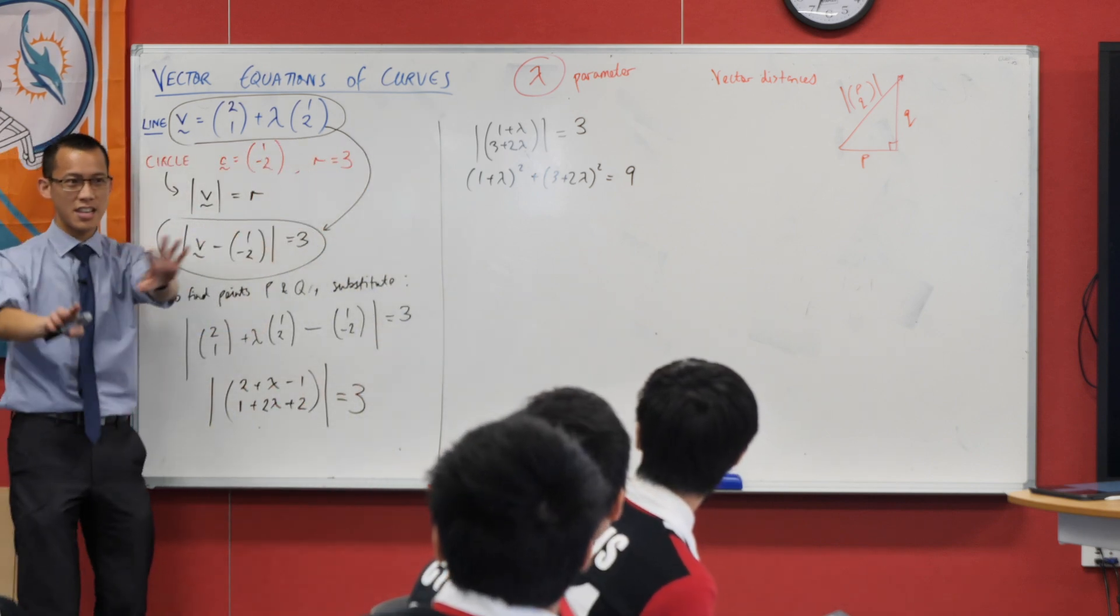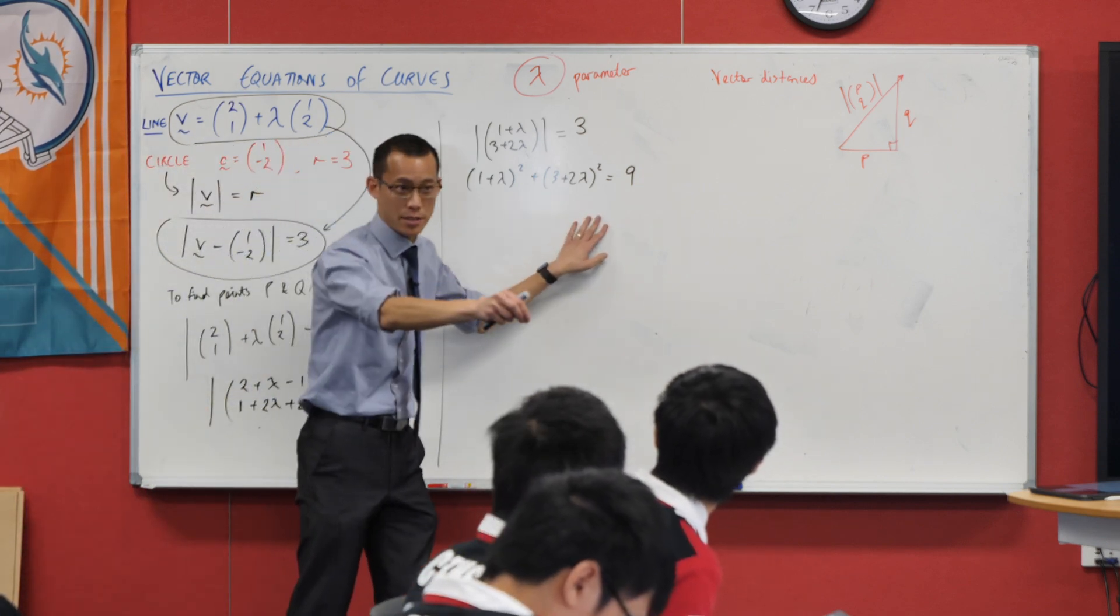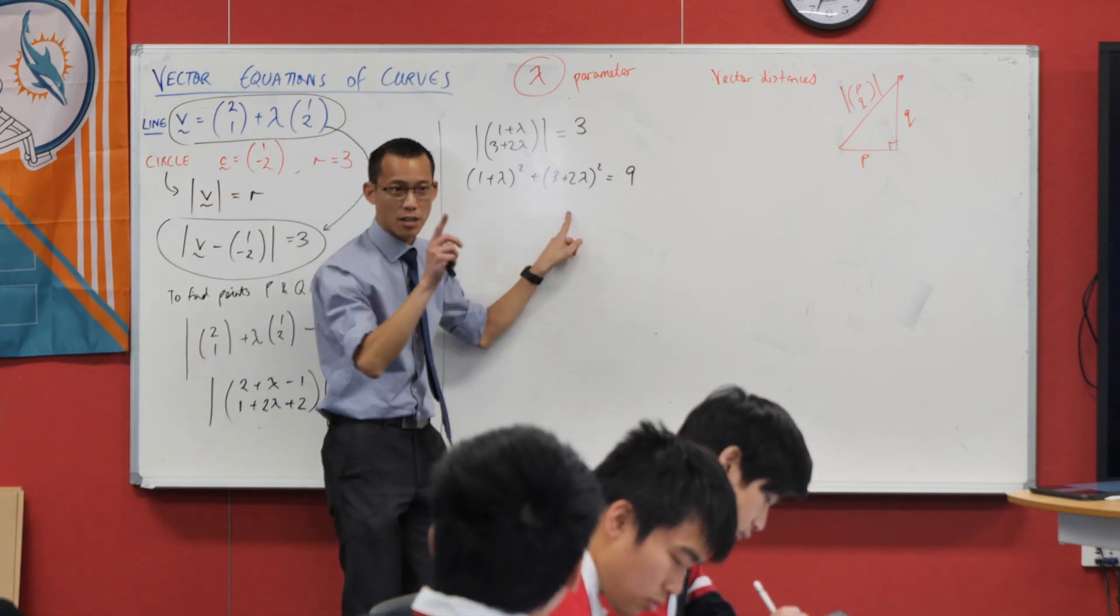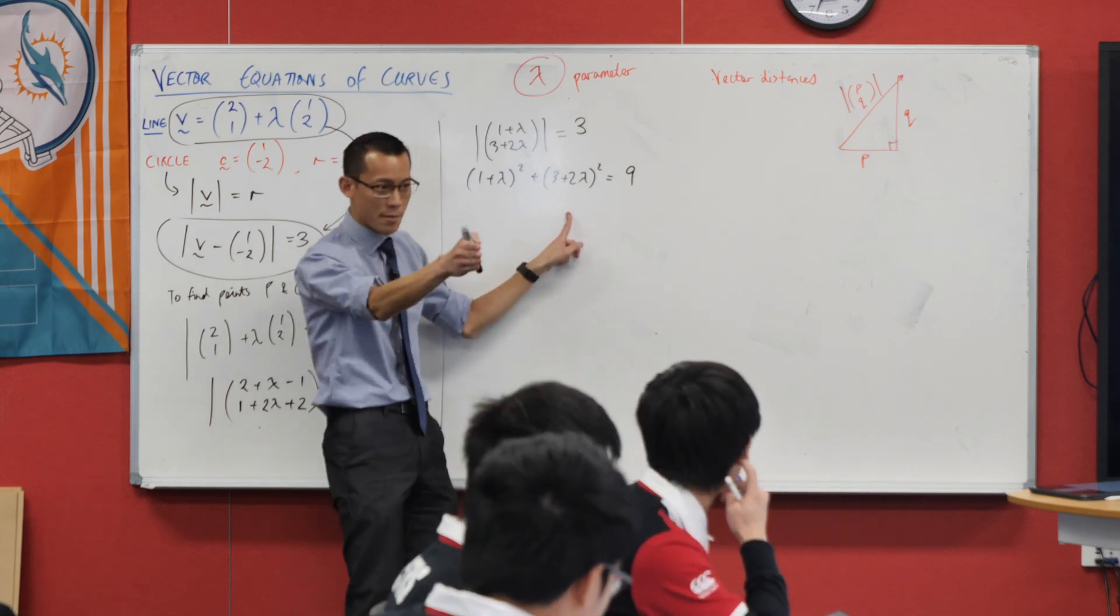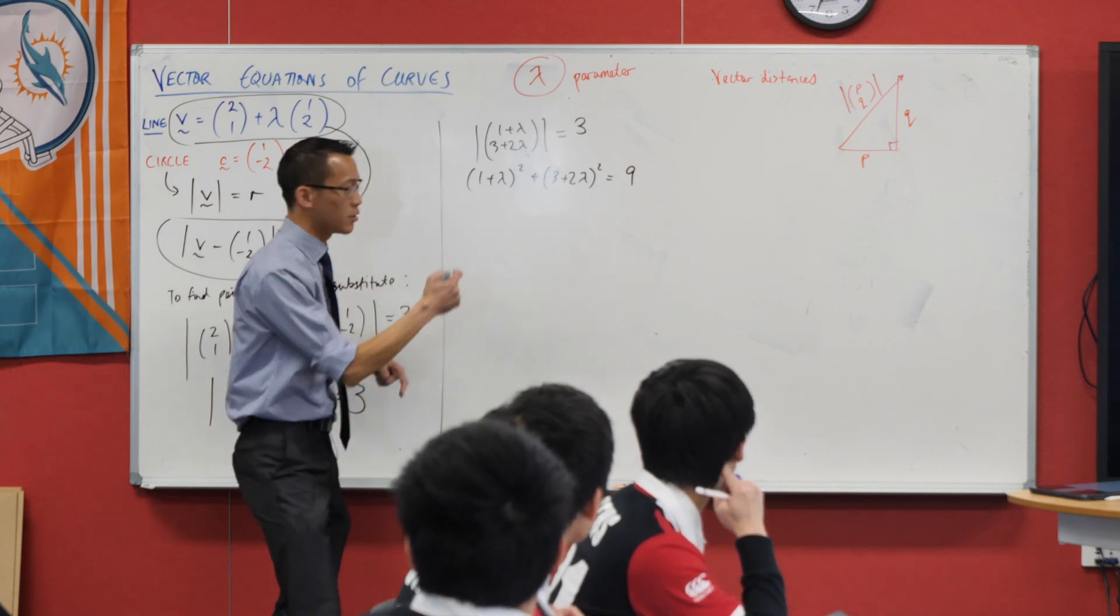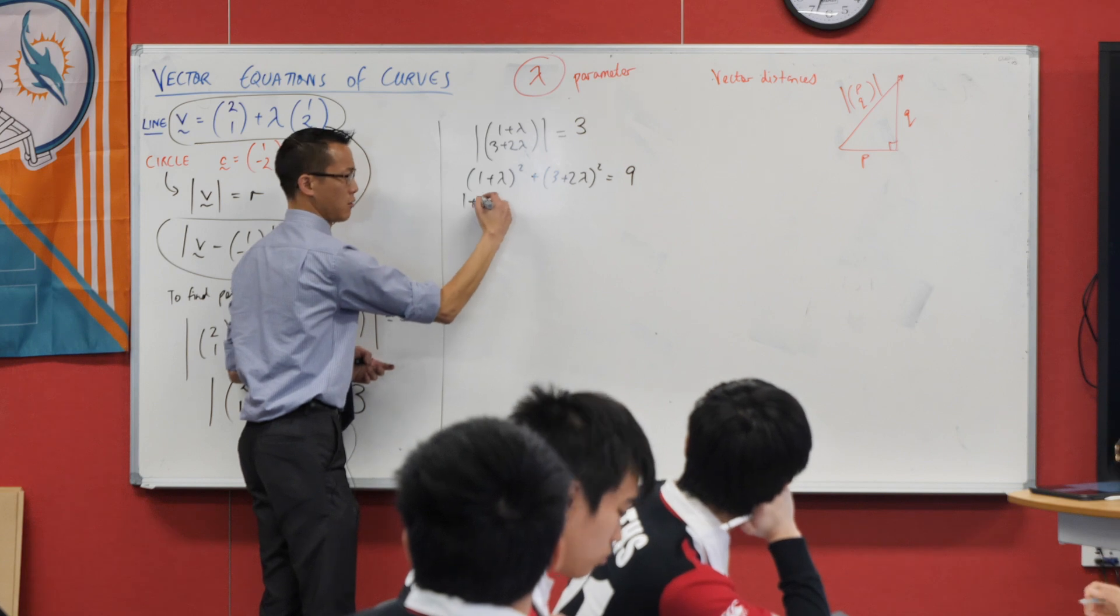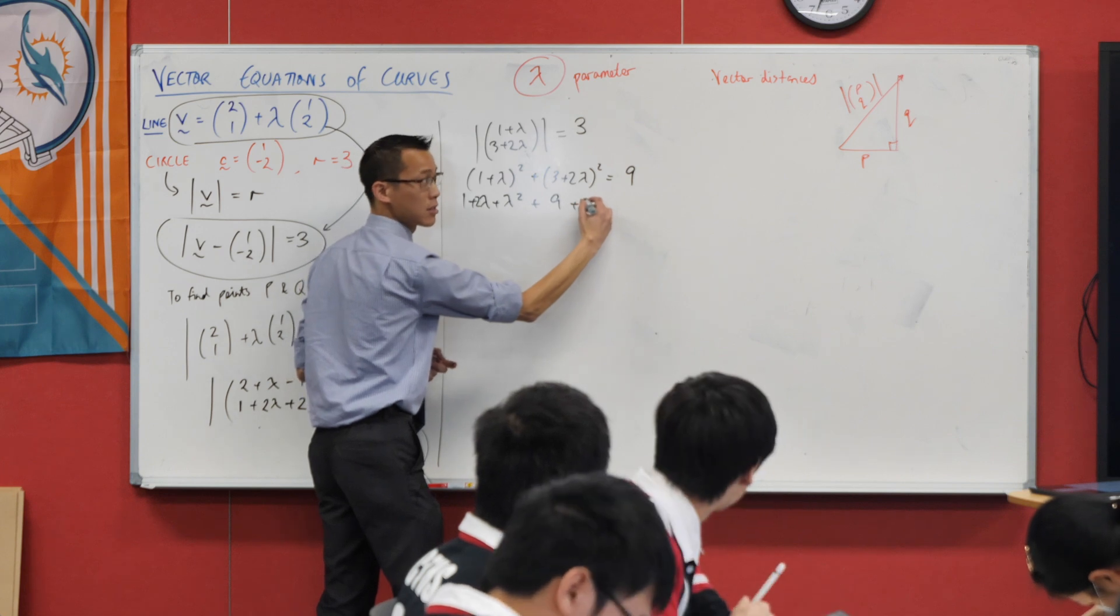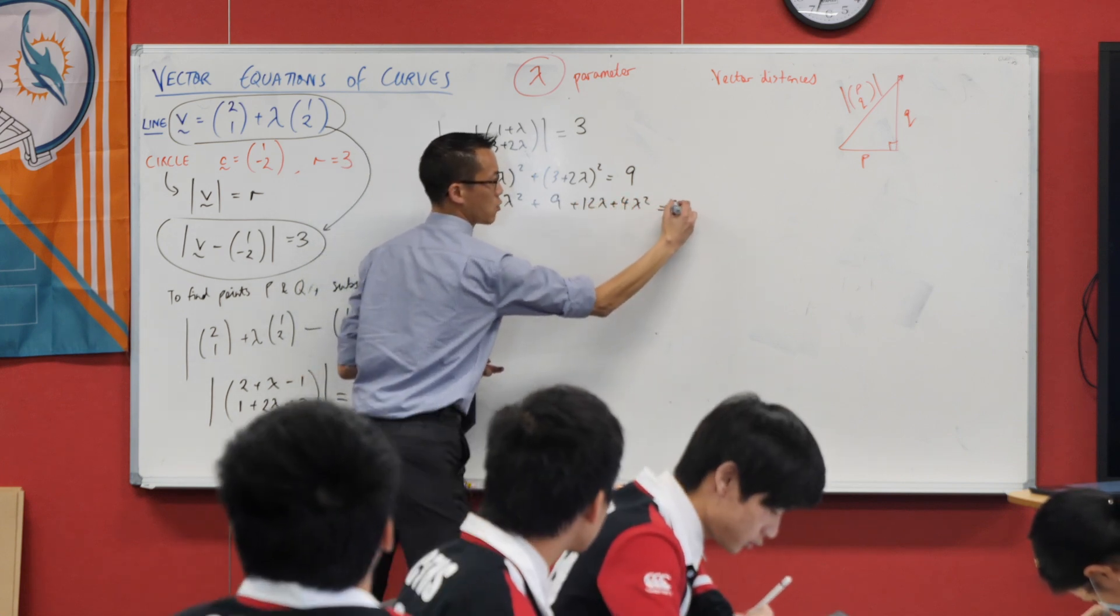Very good. So just think about what's going on here. When we solve this, this is just a quadratic in lambda. When you find your two solutions for lambda, your midpoint's going to be where in relation to those two lambdas? It'll be right in the middle. In other words, it'll be on the axis of symmetry. That's what we would say. So let's go ahead and just kind of unpack what's going on here. What have I got? One plus two lambda plus lambda squared. What's over here? Nine plus 12 lambda plus four lambda squared equals nine. Cancel, cancel. What have I got here?